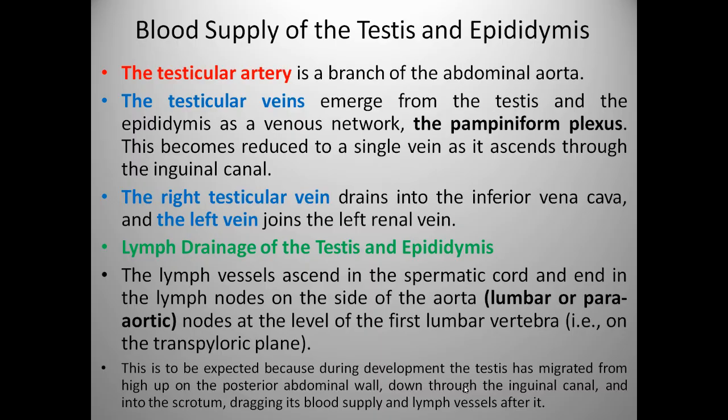Now we will see the blood supply of the testis and epididymis. The testicular artery is a branch of the abdominal aorta. The testicular vein drains from the testis and epididymis as a venous network called the pampiniform plexus. This becomes reduced to a single vein as it ascends through the inguinal canal. The right testicular vein drains into the inferior vena cava and the left vein joins the left renal vein. The lymph vessels ascend in the spermatic cord and drain into lymph nodes on the side of the aorta at the level of the first lumbar vertebra. This is expected because during development the testis migrated from high up on the posterior abdominal wall, down through the inguinal canal into the scrotum, dragging its blood supply and lymph vessels after it.